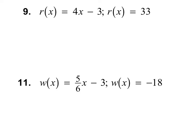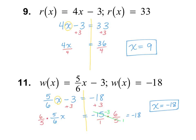I would like for you to try numbers 9 and 11 on your own. Pause the video, and when you're ready, turn it back on and see how you did. For number 9, I got x is equal to 9. For number 11, x is equal to negative 18. If you did not get them right, pause the video and see if you can find your mistakes.